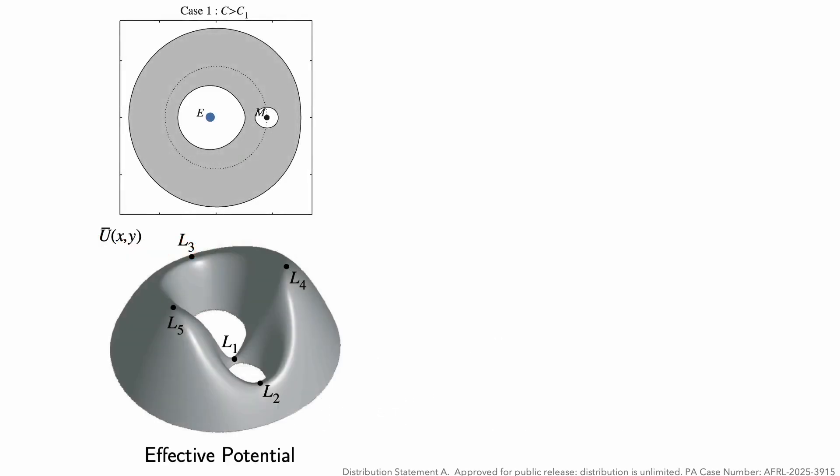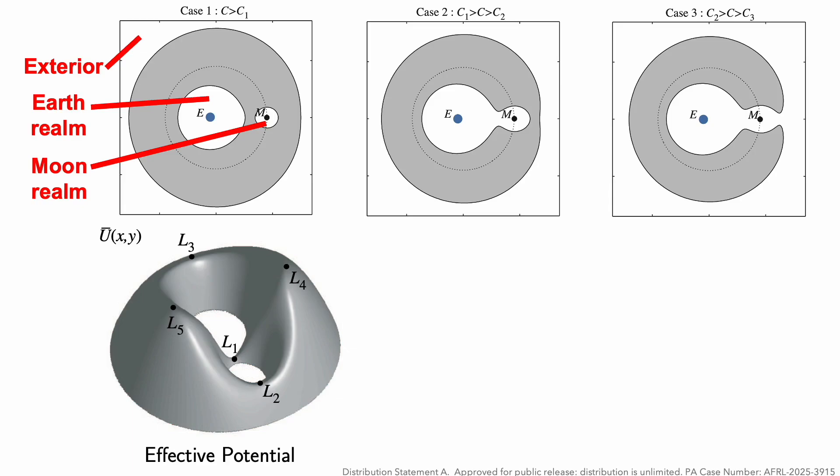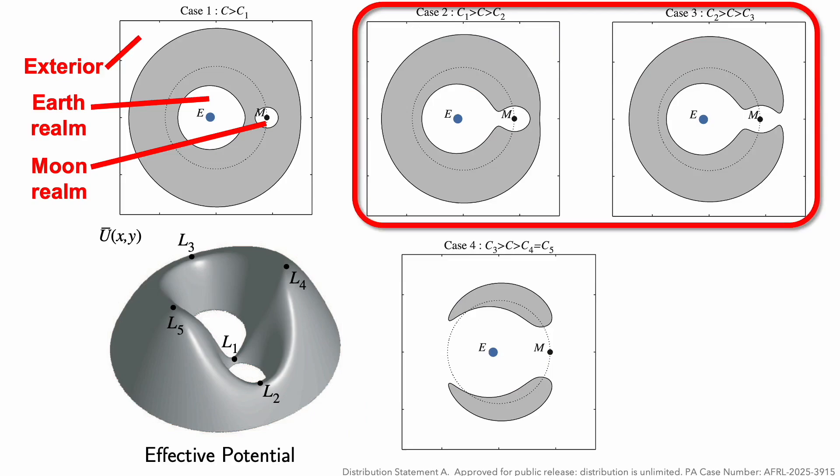These three-dimensional energy surfaces, when you project them onto the position space, nicely partition the space into different regions. The exterior would be the circumbinary orbits. There's the Earth realm with orbits around the Earth, and then the Moon realm. And as we change the Jacobi constant, these neck regions around L1 and L2 and L3 open up. We'll be focusing on these two, which we refer to as case 2 and case 3.